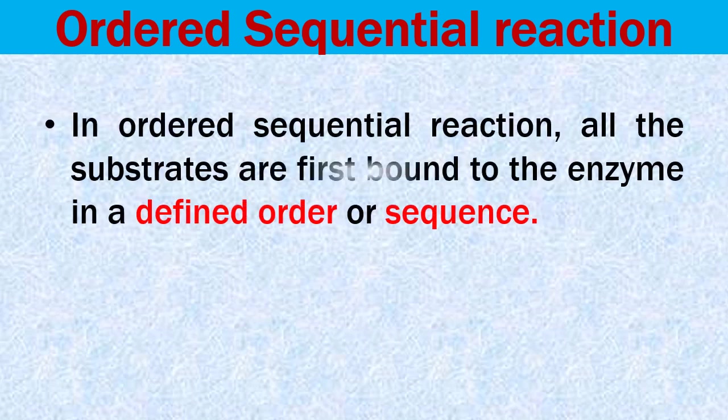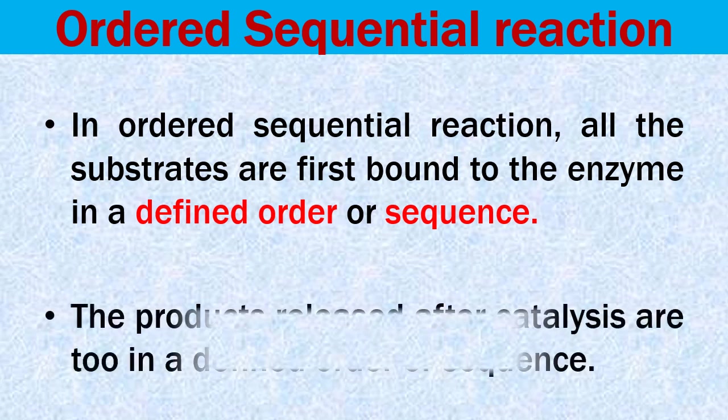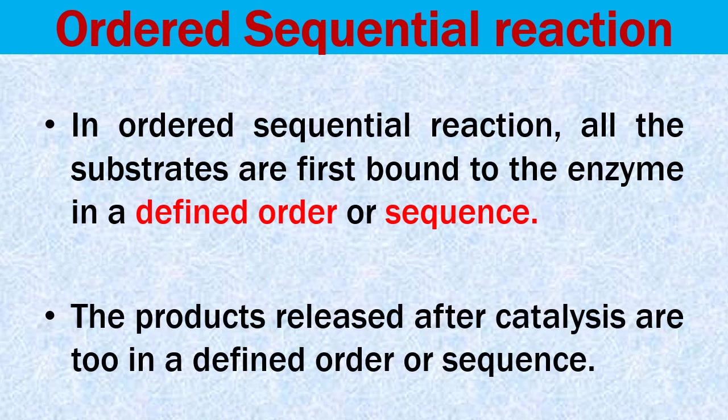In ordered sequential reactions, all substrates first bind to the enzyme in a defined order or sequence. The products released after catalysis are also released in a defined order or sequence.